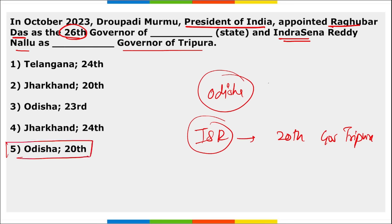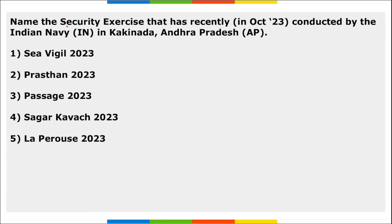Raghubar Das will be succeeding Ganeshi Lal as the new Governor of Odisha, and Indra Sain Reddy Nalu will succeed Satyadeo Narayan Arya as the new Governor of Tripura. The security exercise Prasthan was recently conducted by the Indian Navy in Andhra Pradesh.